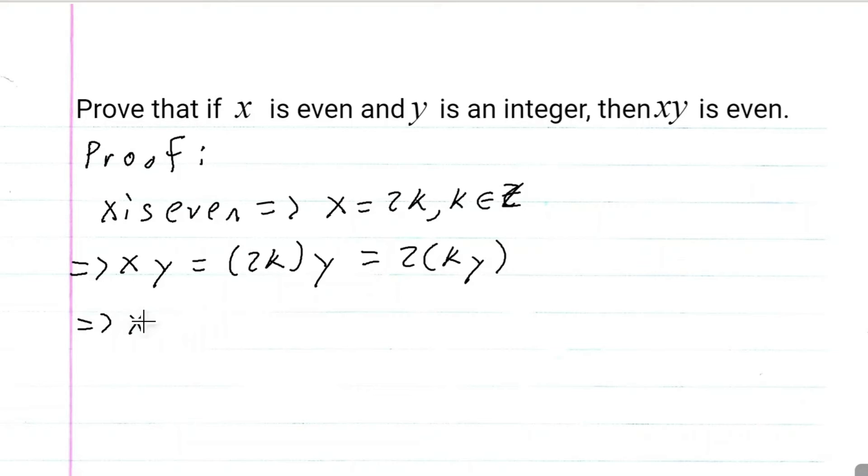Now we have that xy is equal to 2 times an integer. Because if k is an integer and y is an integer, that means ky is an integer. And that is the definition of even. That means that xy is even, and that's what we wanted.